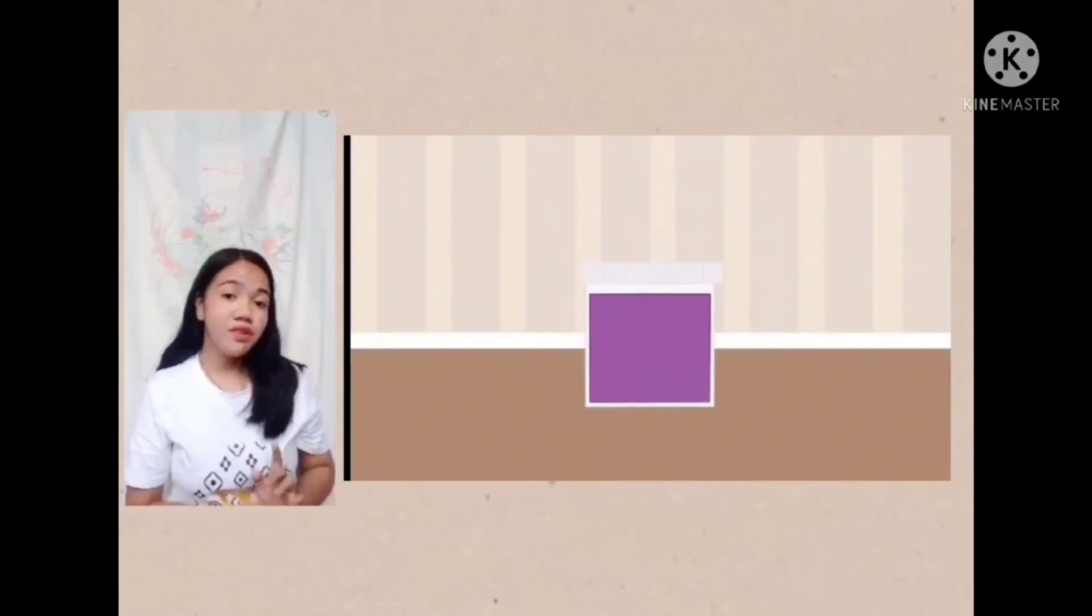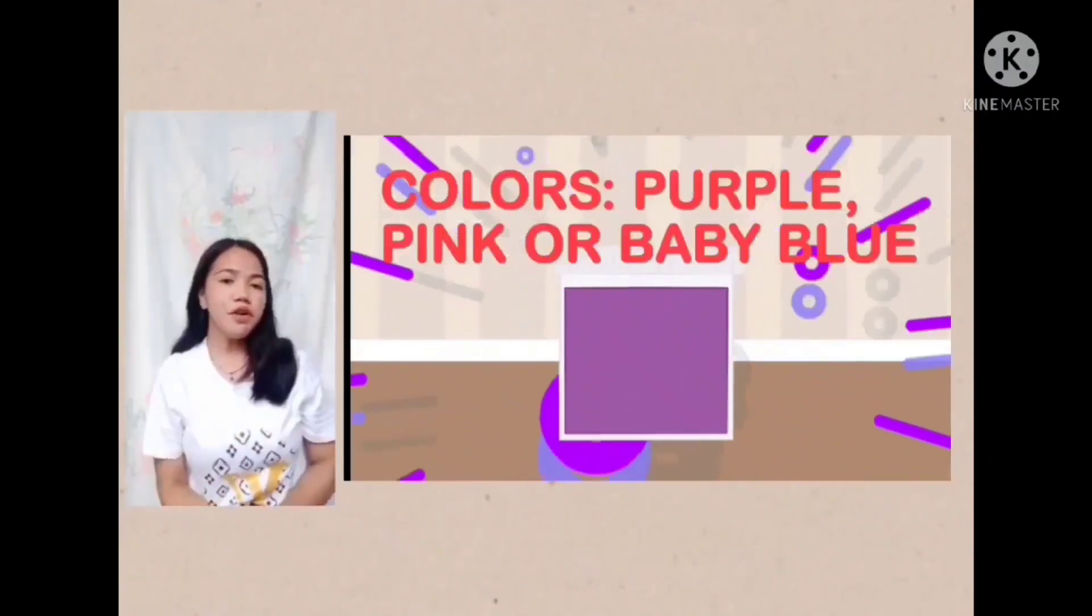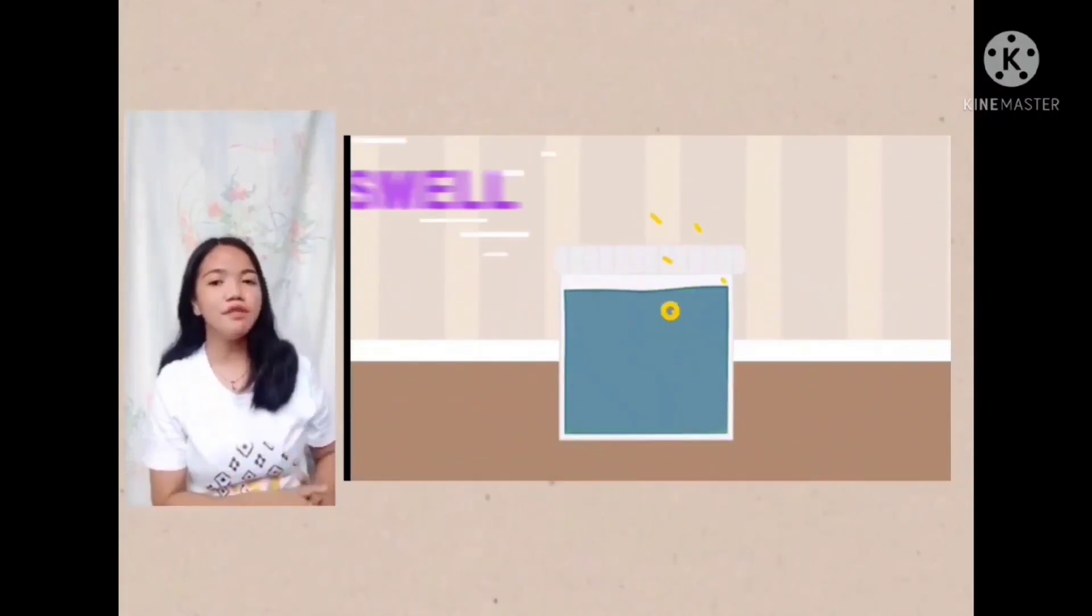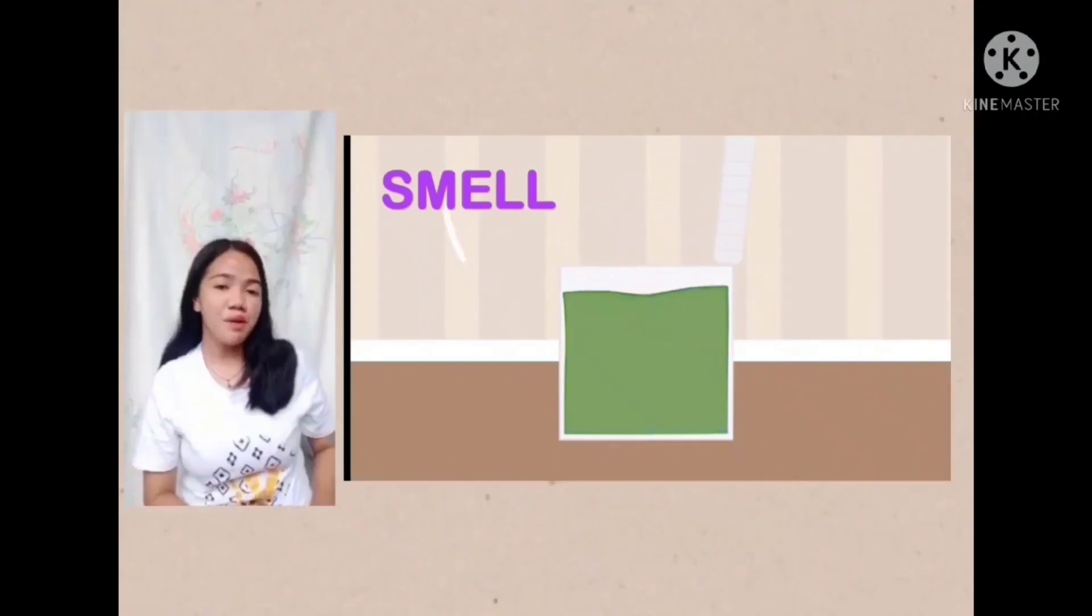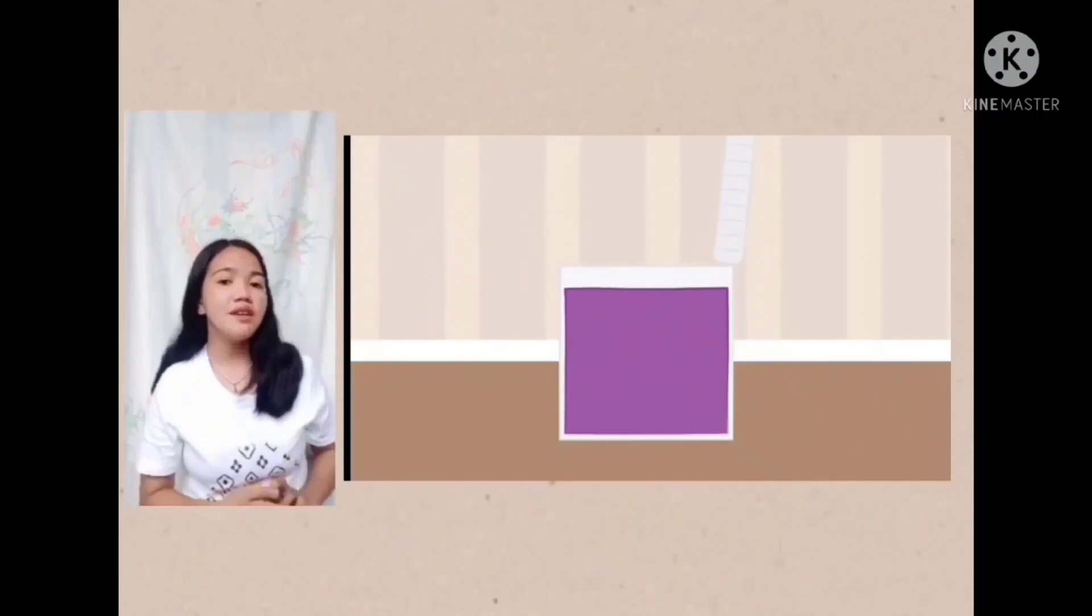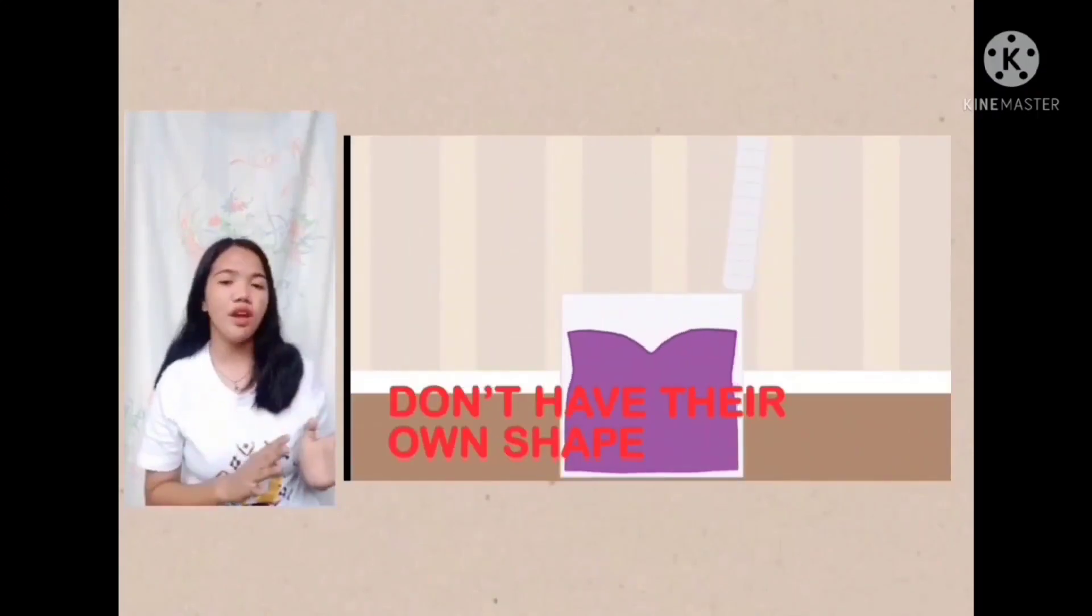Everyone loves playing with slime, right? Slime can have different colors like purple, pink, and baby blue. They have smells. Sometimes they smell different from other slimes. They also have textures. They are sticky, but they don't have their own shape.